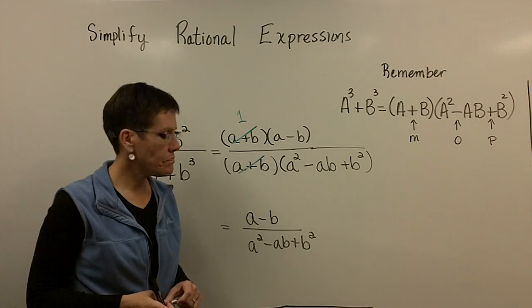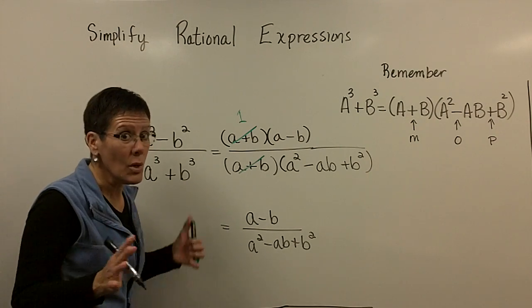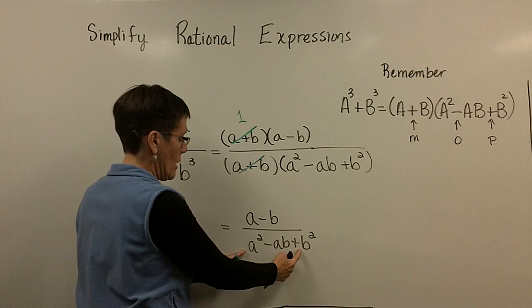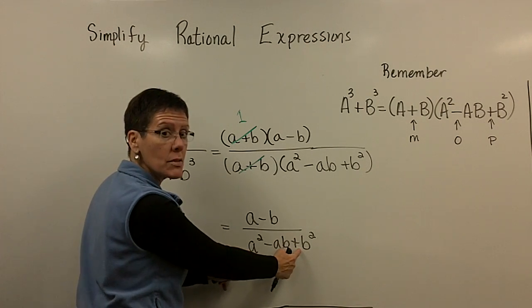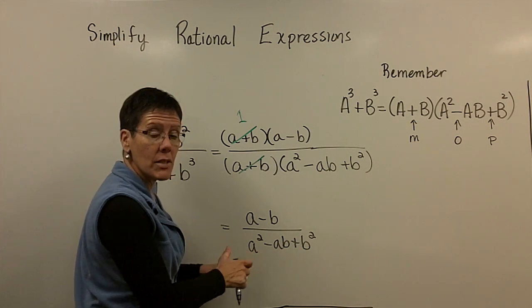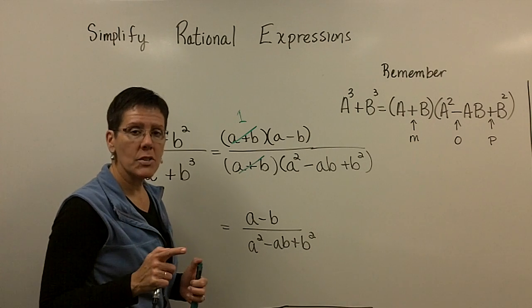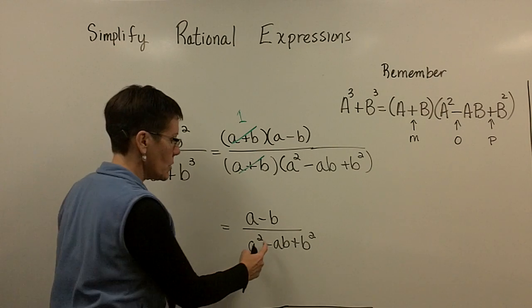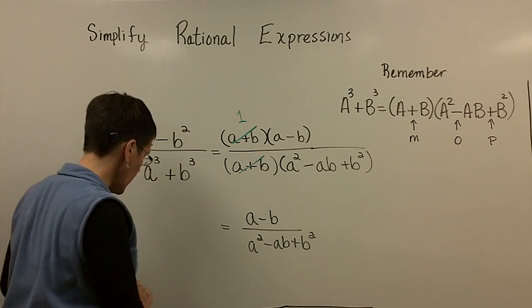This is not factorable again. And if you didn't know why, you could use the AC method to determine that. There's no way to find two numbers whose product is one that adds to be a minus one, because product is one has to be one and one. Those will always add to be either two, or negative two, so they can't add to be that one right there.